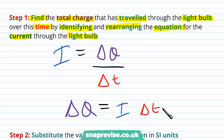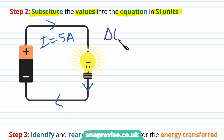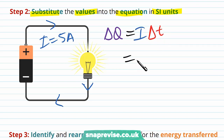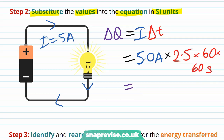Now we substitute the values in SI units. The current is 5 amps, so the charge that moves through the lamp is given by current times the change in time: ΔQ = 5 amps × Δt. We know the time is 2.5 hours, but we need to convert that to seconds: 2.5 × 60 × 60 = 9,000 seconds. This gives us a total charge of 5 × 9,000 = 45,000 coulombs.